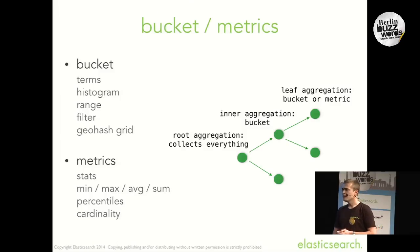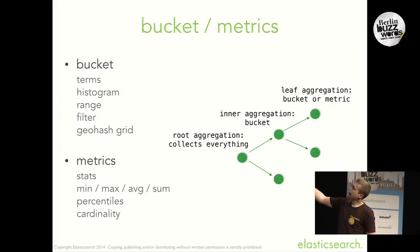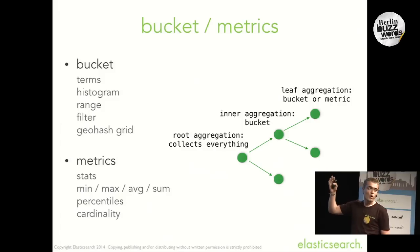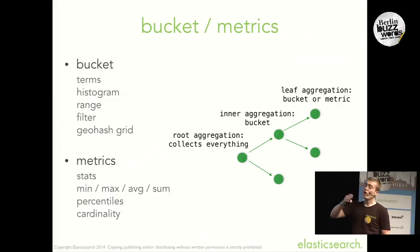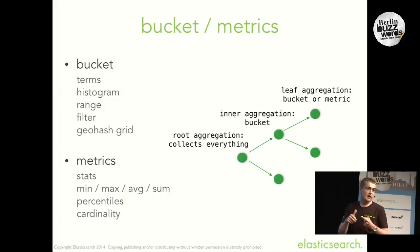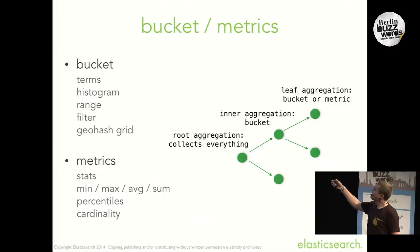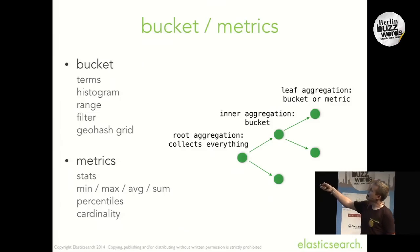When I said composability, what does it mean? Every bucket aggregation can have zero, one, or many sub-aggregations that can be either bucket aggregations or metrics aggregations. And metrics aggregations can only be used as a leaf of an aggregation tree.